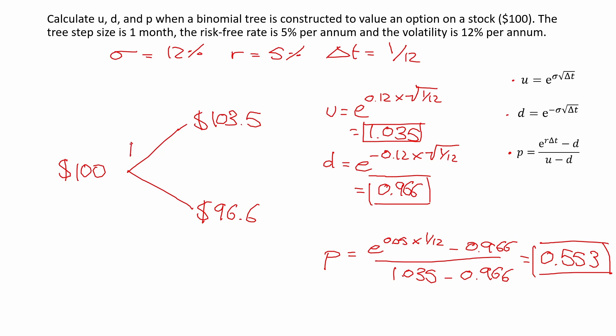So p would be the probability of the stock price going up: 0.553. And then 1 minus p would be down there, which would give us 0.447. Excellent. And so this is how you build or construct a binomial tree given the volatility.